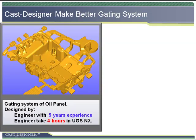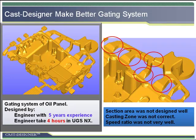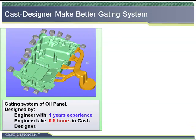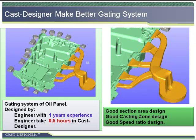Not only is Cast Designer fast, it also makes gating systems better. The displayed example is an oil panel for automotive. This gate system was designed by an engineer with 5 years of experience and took 4 hours in UniGraphics NX. However, from a professional point of view, in the area marked by the circle, the section area was not designed well, the casting zone was also not correct, and the whole speed ratio was also not designed well. The same design was also done by Cast Designer. In this case, the design engineer had only 1 year of experience and took around half an hour to complete the job. The major advantages are not only speed, but also the good section area design of runner, the perfect casting zone design, and more reasonable speed-up ratio. So Cast Designer not only makes the job easy and simple, but much better in quality.